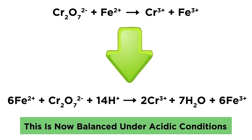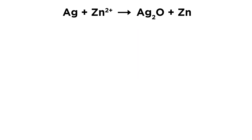Let's make sure to realize that this is the algorithm we can use under acidic conditions, which is why hydrogen ions are present. If this is occurring under basic conditions, the algorithm will be just a little bit different, but it will start out by balancing as though we are under acidic conditions. Let's say we have solid silver reacting with zinc 2+ to become silver oxide and solid zinc.